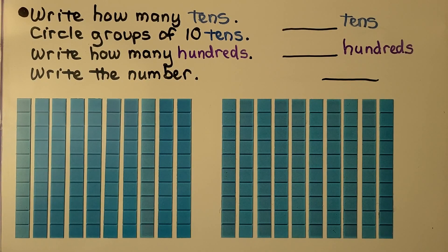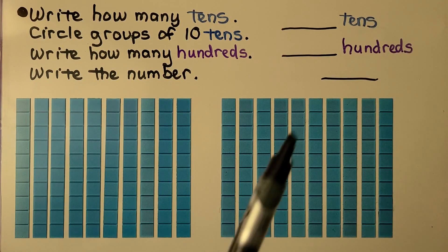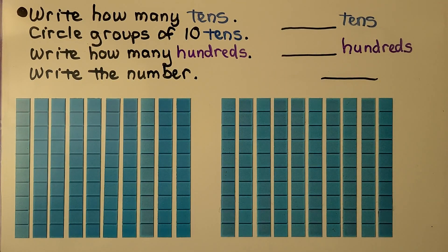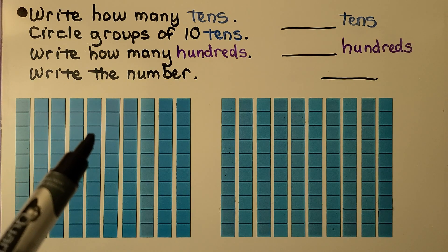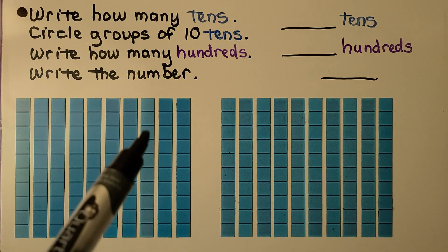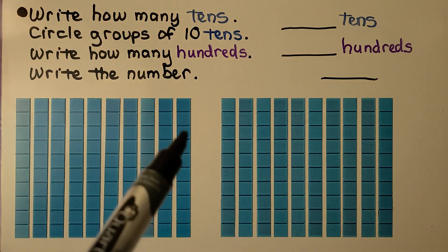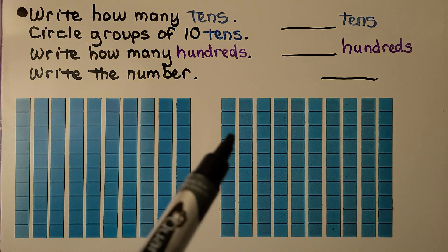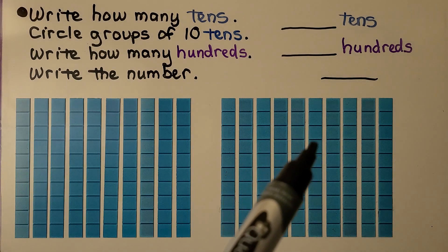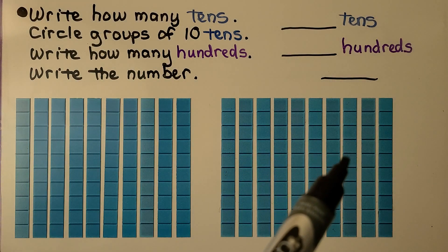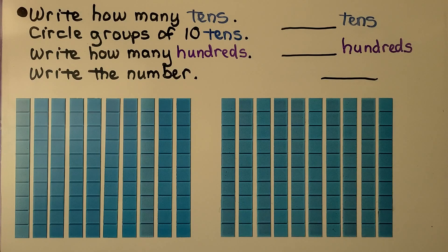Here we need to write how many tens there are and fill in the space for the number of tens. We can count them: 1, 2, 3, 4, 5, 6, 7, 8, 9, 10, 11, 12, 13, 14, 15, 16, 17, 18, 19. There are 20 tens.